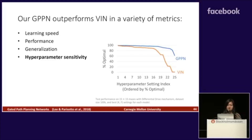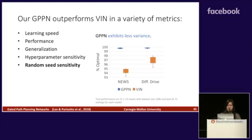Next is hyperparameter sensitivity. We tested each model using 25 different hyperparameter settings. In this plot, the y-axis is the performance and the x-axis are the hyperparameter setting indices ordered by performance. The curve for GPPN is flatter, meaning that it is more stable to hyperparameter changes. Lastly, we measure random seed sensitivity — we trained each model multiple times using different random seed initializations and recorded its performance. The box plot shows that GPPN exhibits less variance and is therefore less sensitive to random seed initializations.